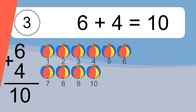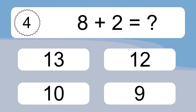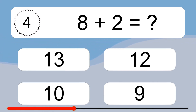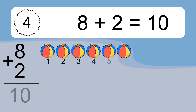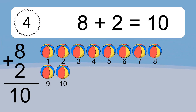8 plus 2 equals what? 8 plus 2 equals 10. Let's count it: 1, 2, 3, 4, 5, 6, 7, 8, 9, 10.